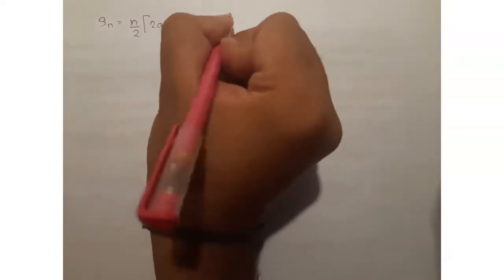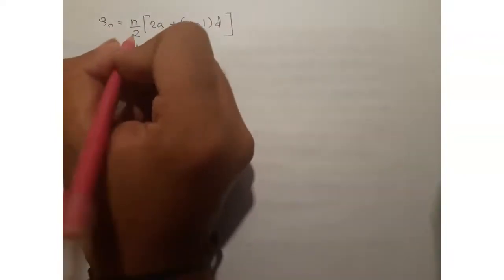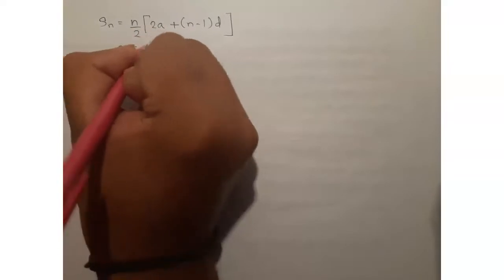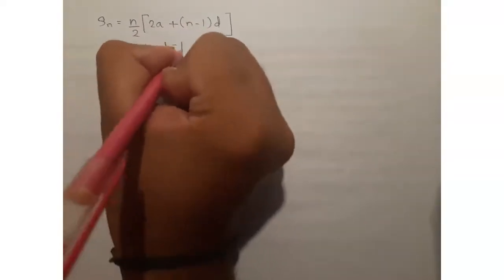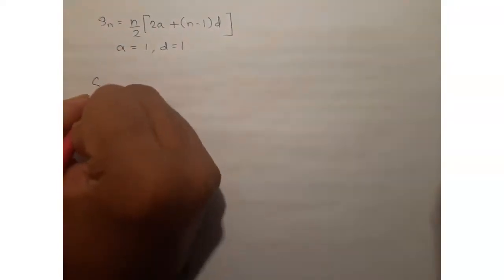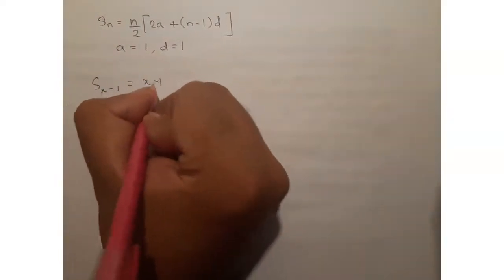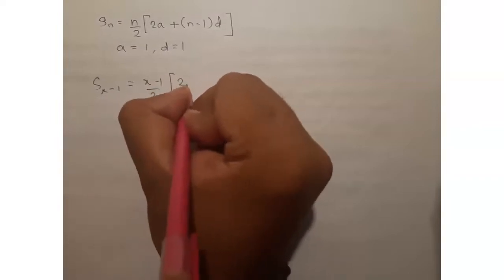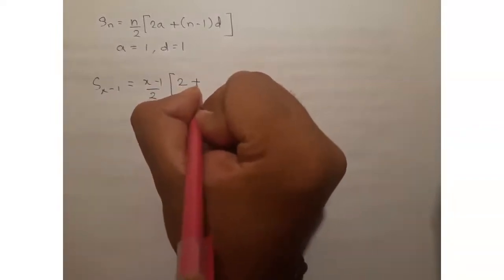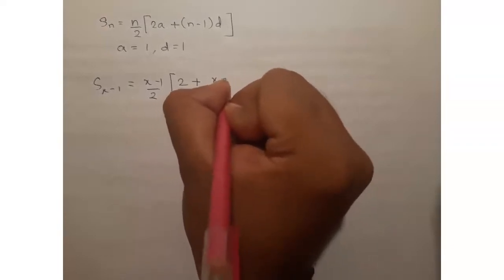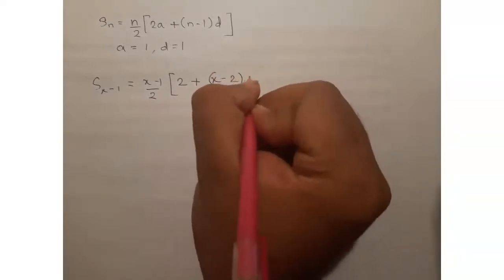We can use the formula Sn equals n by 2 times 2A plus n minus 1 into D. Here A equals 1 and D is also equal to 1. So we have S x minus 1 equals x minus 1 by 2, 2A—A is 1—plus the number of terms is x minus 1, so this will be x minus 2 into D, and D is also 1.